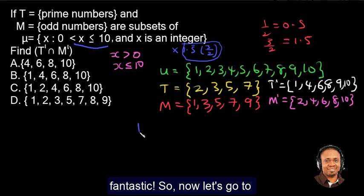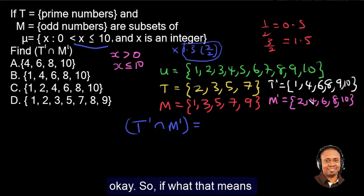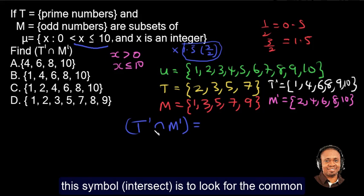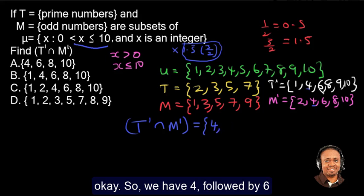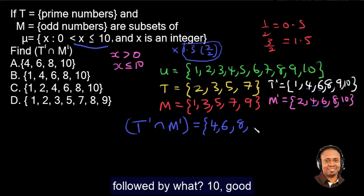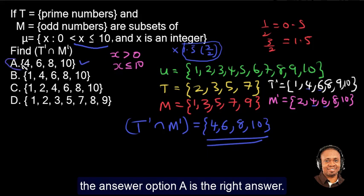So now let's go to the prime of T intersects the prime of M. So what that means, this symbol intersect is to look for the common element, element that belongs to both subsets. So if we look at this, we can see that 4 belongs to both sets. So we have 4, followed by 6. What else can you see? 8. Followed by what? 10. So this is your final answer. So the answer option A is the right answer.